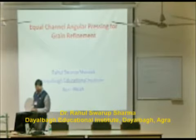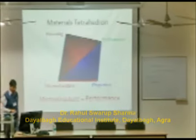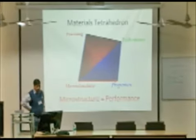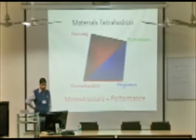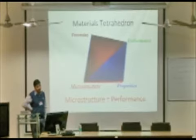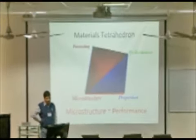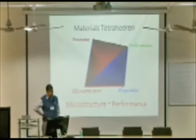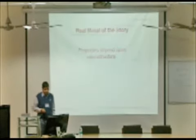So why do we require light material? This is a metal tetrahedron which shows that processing, microstructure, properties, and performance are totally interrelated. If you want to enhance the performance, we have to enhance the properties. If you want to enhance the properties, we have to fabricate the microstructure, and for that we have to go for some kind of processing technique. So performance is related to microstructure.